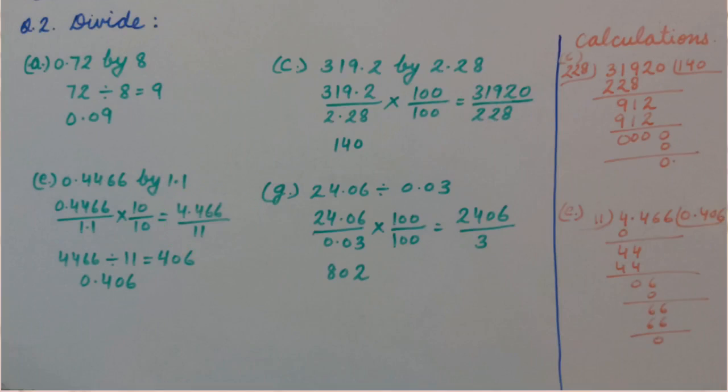Now when we divide 4,466 by 11, we get 406. And because in the dividend three decimal places are there, we will write the decimal in the quotient counting three places from the right-hand side.